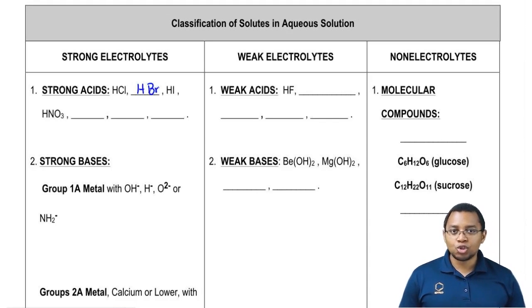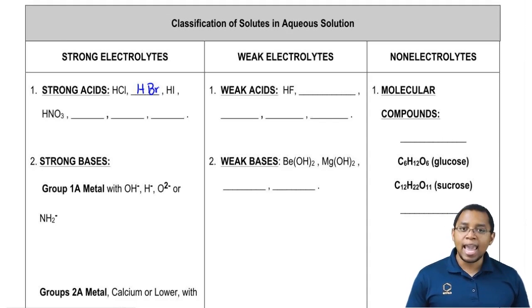HF is not considered a strong acid. It's actually considered a weak acid. It's because it possesses hydrogen bonding. You'll learn about that later on, but just realize because of the hydrogen bonding it has present in it, HF is considered a weak acid.